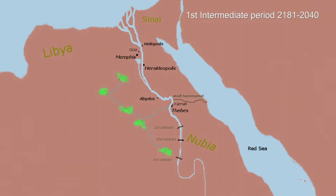As the nobility grew, they weakened the pharaohs of the Old Kingdom and eventually replaced them, with order falling apart into several different districts ruling themselves. This is known as the first intermediate period of Egypt.